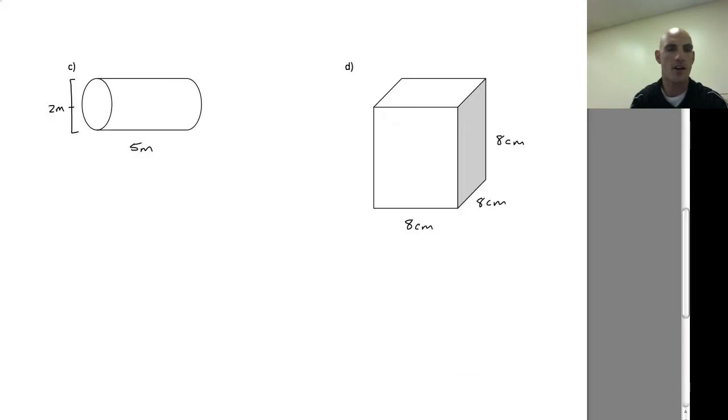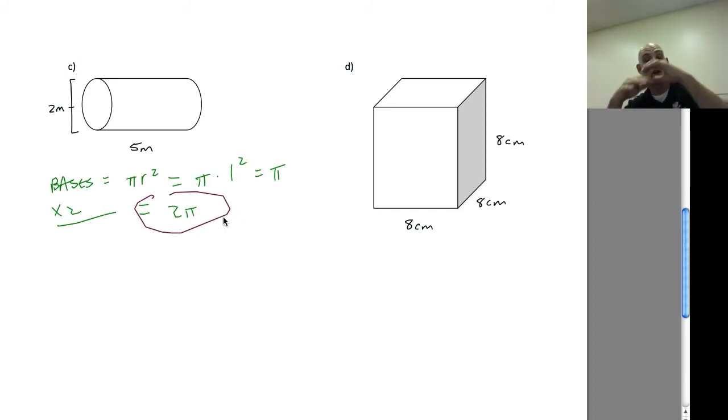The bases are going to be pi r squared, which is equal to pi times 1 squared equals pi. So times 2 would be equal to 2 pi. So there's my first total. So whatever I'm going to get for this rectangle around it is going to be added to 2 pi.